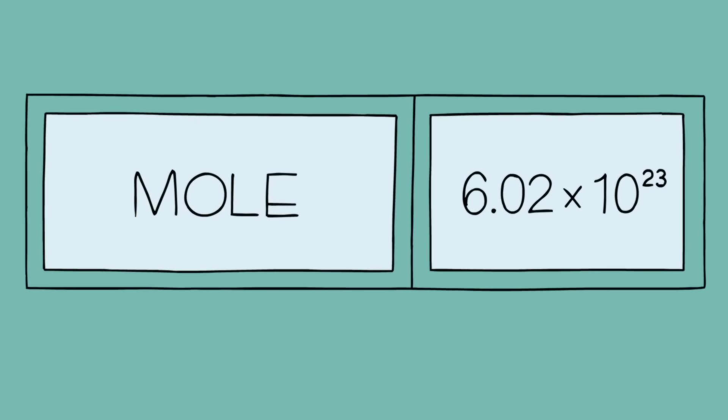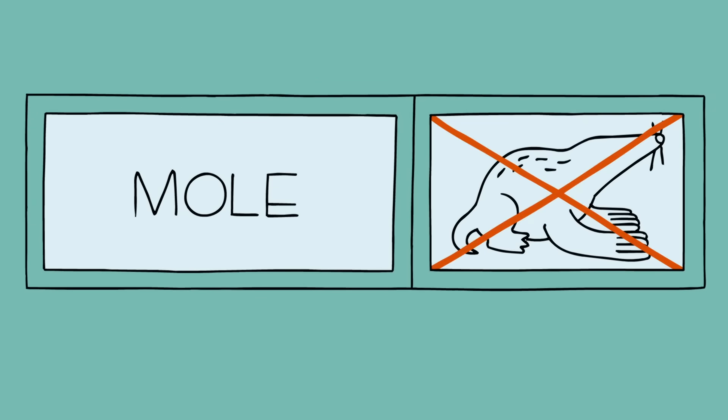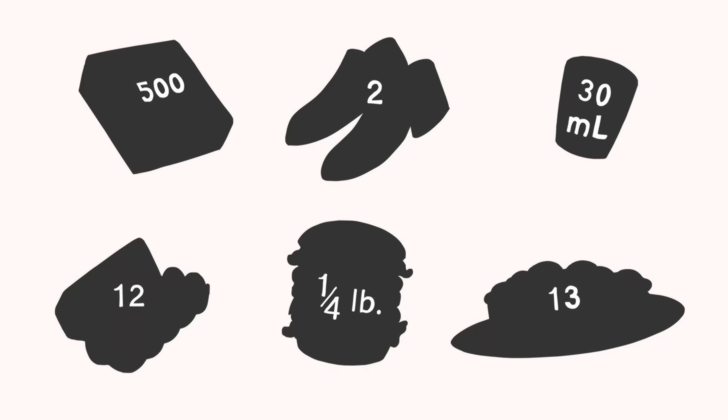Well, a mole is really the same thing. For a chemist, a mole conjures up the number 6.02 times 10 to the 23rd. Not a fuzzy little animal. The only difference is that the other quantities are more familiar to us.